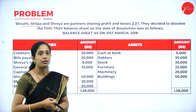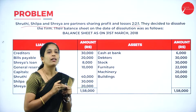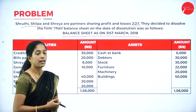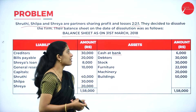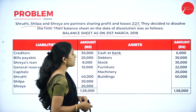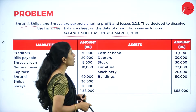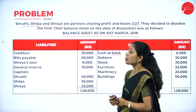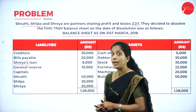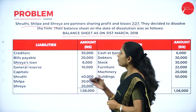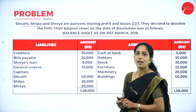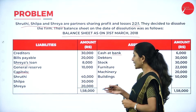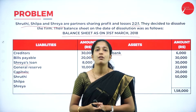The balance sheet is as on 31st March 2018. On the assets side: cash at bank ₹6,000; debtors ₹30,000; stock ₹30,000; furniture ₹22,000; machinery ₹20,000; building ₹50,000. On the liabilities side: creditors ₹30,000; bills payable ₹20,000; Shreya's loan ₹8,000 (Shreya is a partner who provided a loan to the firm); general reserve ₹10,000; and capital of Shruti, Shilpa, and Shreya: ₹40,000, ₹30,000, and ₹20,000 respectively.